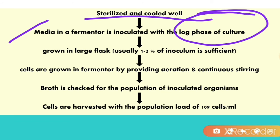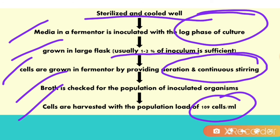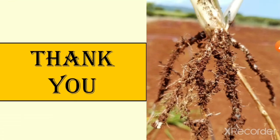We use the log phase of culture because it is very active and grows well with different types of enzymatic activities. The culture is grown in a large flask — usually 1 to 2% of inoculum is sufficient. Cells are grown in the fermenter by providing aeration and continuous stirring. During the production period we have to check the growth of microorganisms. Cells are harvested with a population load of around 10^9 cells per ml.